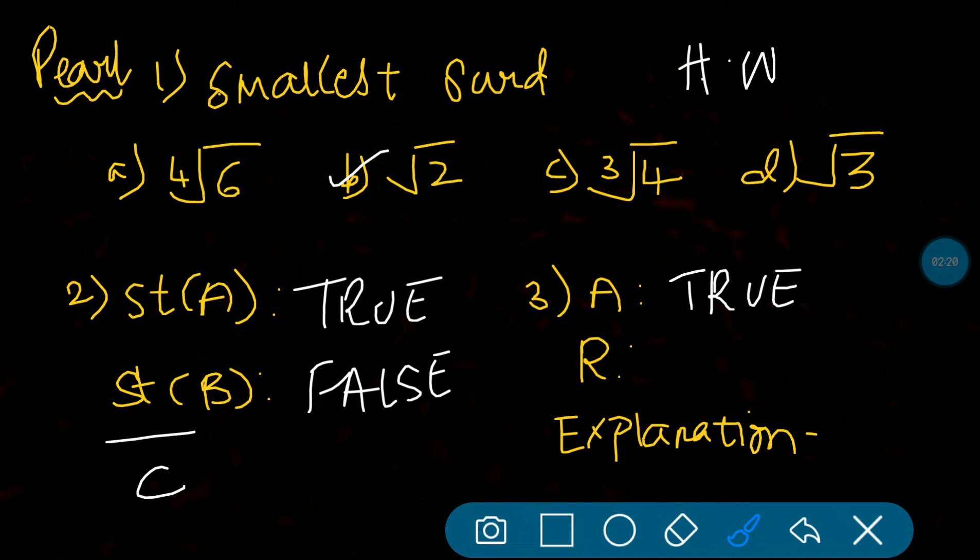Reason part: Comparison of surds is possible when their orders are equal. Absolutely correct. Only if their orders are equal is it possible. Now what do you think about the explanation? Yes, the reason is relevant to the assertion. The explanation is also correct, so option A is correct.